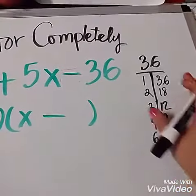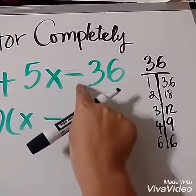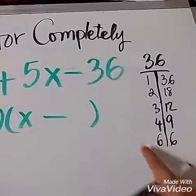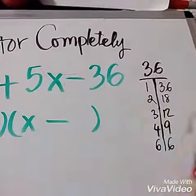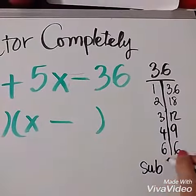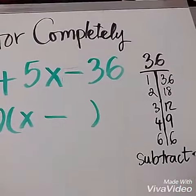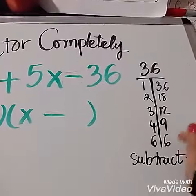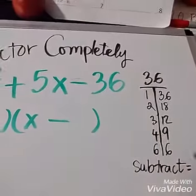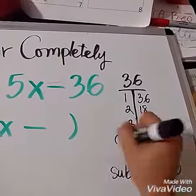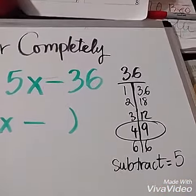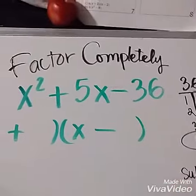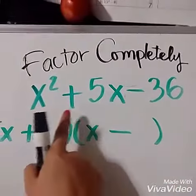After you're done factoring, you ask yourself what this sign means. The negative means you're going to subtract the two numbers to get the middle term. So I'm going to subtract the two numbers, one of these, to make a 5. The only one that satisfies is 4 and 9. So here I have 4 and 9, but I don't know where to put them.